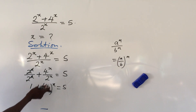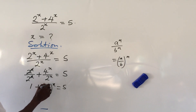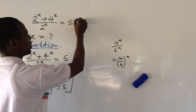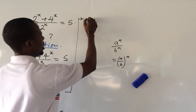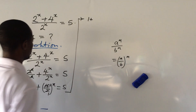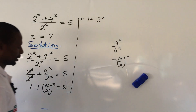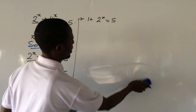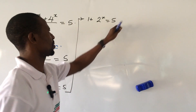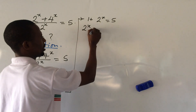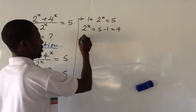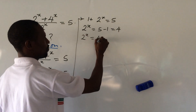We can simplify 4/2 by dividing numerator and denominator by 2, giving us 2. So we now have 1 + 2^x = 5. Collecting like terms, we move the 1 to the other side: 2^x = 5 − 1, which equals 4. So we have 2^x = 4.